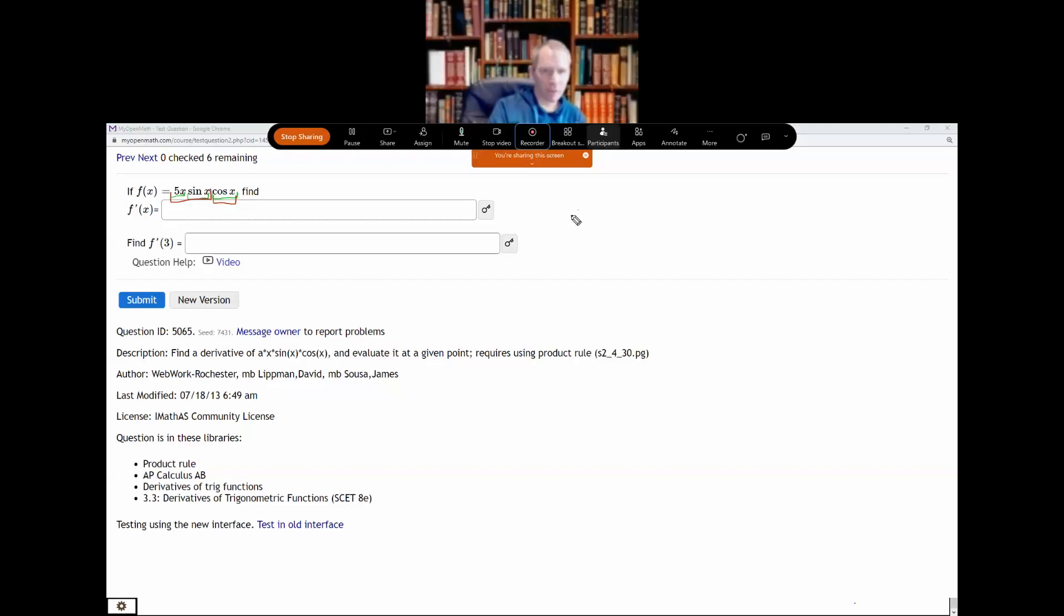Okay, so then when I go to write f prime, I have the derivative of the first times the second plus the first times the derivative of the second.